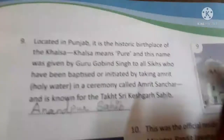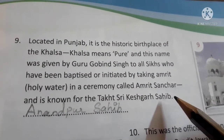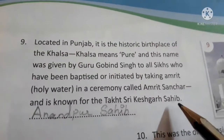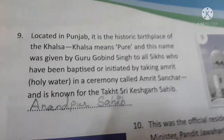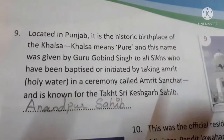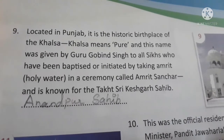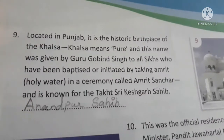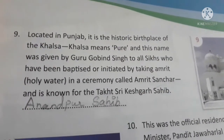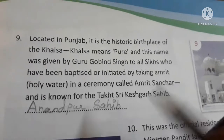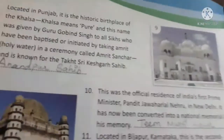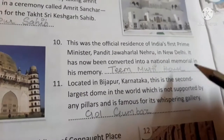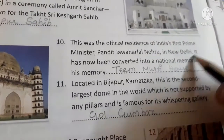Located in Punjab, this is the historic birthplace of the Khalsa. Khalsa means 'pure' and this name was given by Guru Gobind Singh to all Sikhs who have been baptised by taking Amrit or holy water in a ceremony called Amrit Sanchar. It is known for the Takht Keshgarh Sahib — it is Anandpur Sahib.